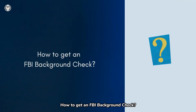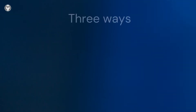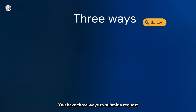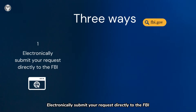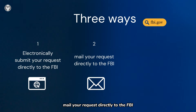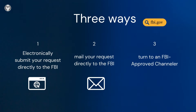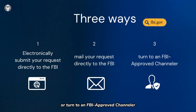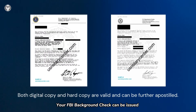How to get an FBI Background Check? You have three ways to submit a request: electronically submit your request directly to the FBI, mail your request directly to the FBI, or turn to an FBI-approved channeler. Your FBI Background Check can be issued in a digital copy, PDF format, or a hard copy.